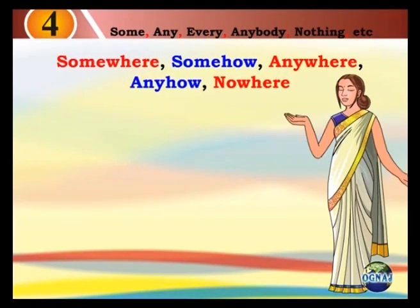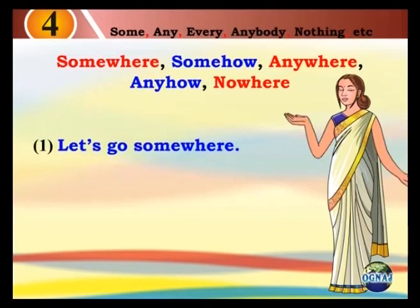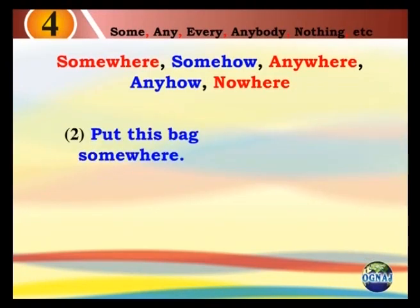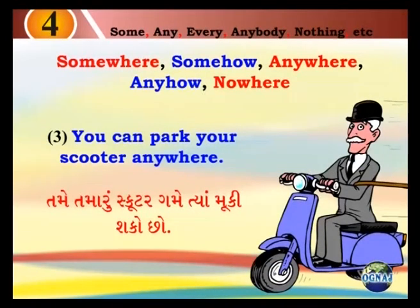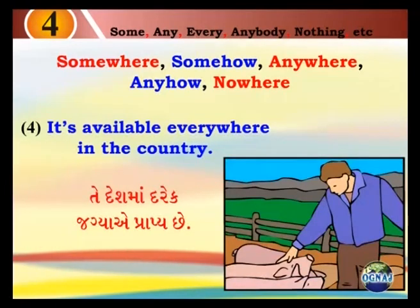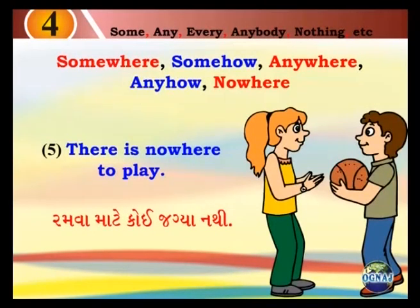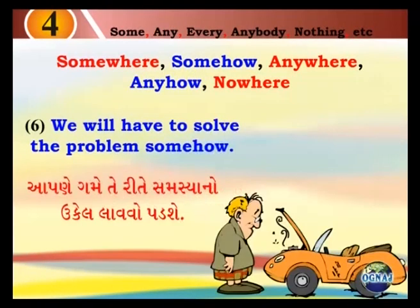Somewhere, somehow, anywhere, anyhow, nowhere. 1. Let's go somewhere. Chalo kyaak jaiye. 2. Put this bag somewhere. A bag kyaak munkhiye. 3. You can park your scooter anywhere. Tame tamaaru skooter gammet yaw munkhi shakwo chhe. 4. It's available everywhere in the country. Tee desh ma dharek jagyya aeyi prapya chhe. 5. There is nowhere to play. Rambamata koi jagyya nathi. 6. We will have to solve the problem somehow. Aapani gammet e rite sama siya no ukhe lavo padh chhe.